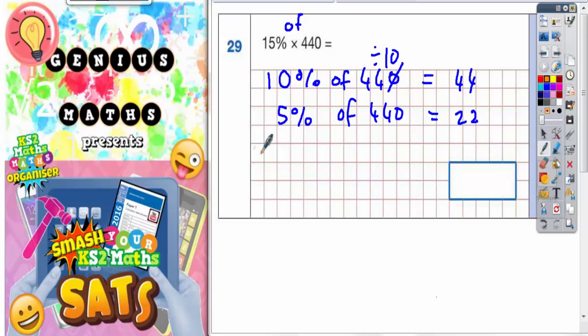Now to get the final answer we need to add these together. Well, 10% add 5% is going to be your 15%. So you've got to do 44 add 22. So 4 add 2 is 6 and 4 add 2 is 6. So your final answer is 66.